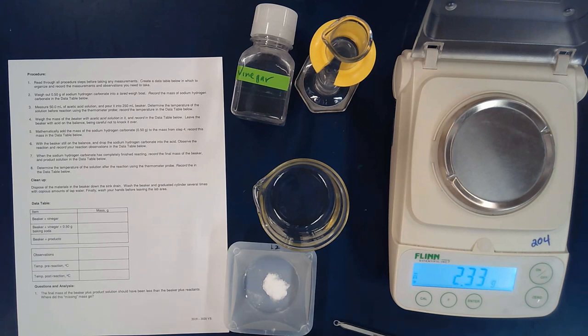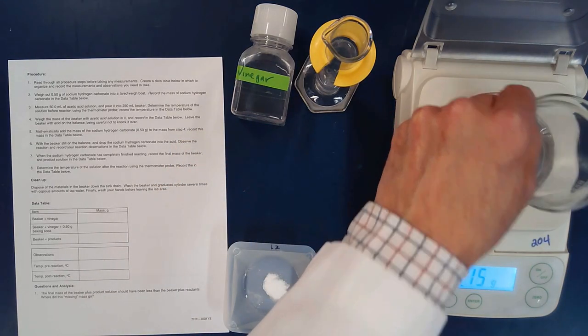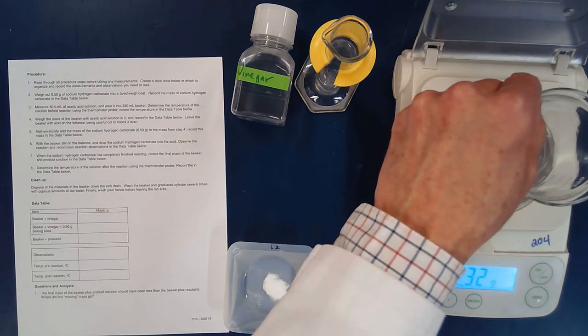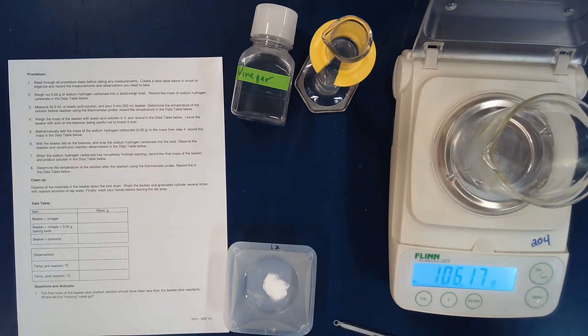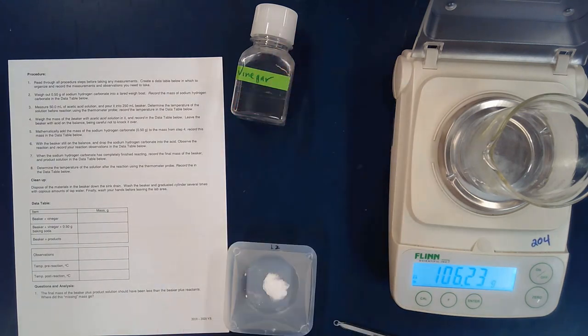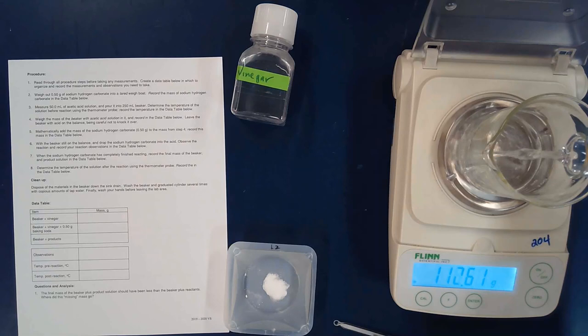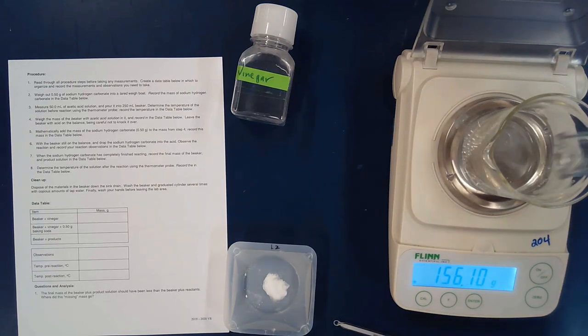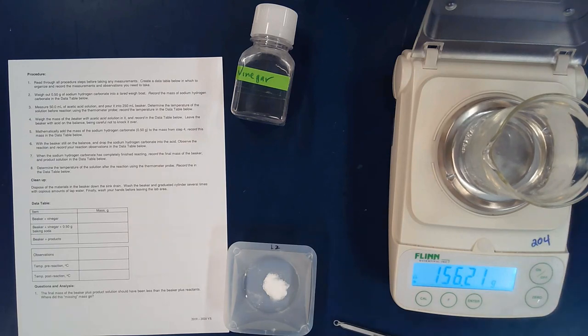And what I'm going to do is we're going to do this reaction inside of a beaker. So we're going to start out and zero out. I'm going to put my vinegar in here, as it says in the procedure, 50 milliliters of just plain old household vinegar. And so this is the weight of the beaker and the vinegar. I'm going to write this down because this mass is the mass that we're going to add 0.5 grams of baking soda to. And so then the total mass will not be 156.21, but 156.71 grams when we add that 0.5 grams of baking soda.